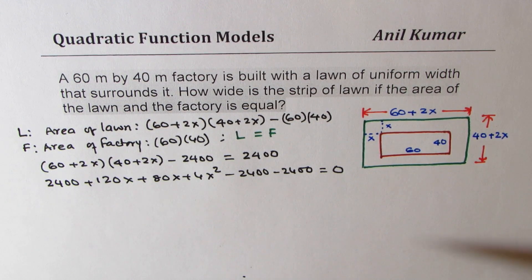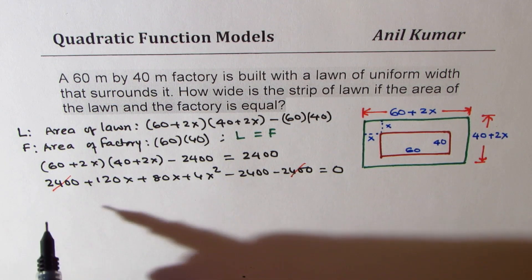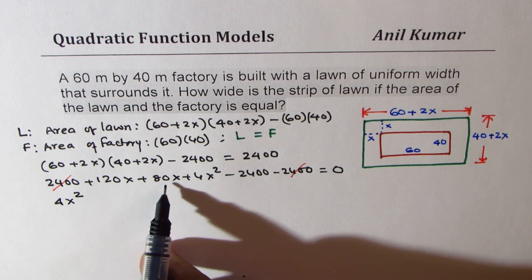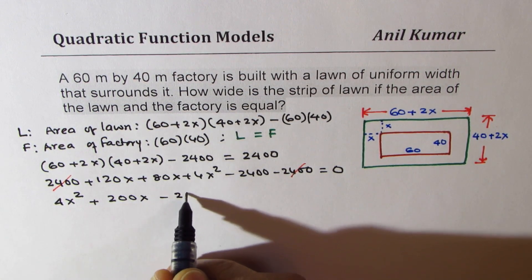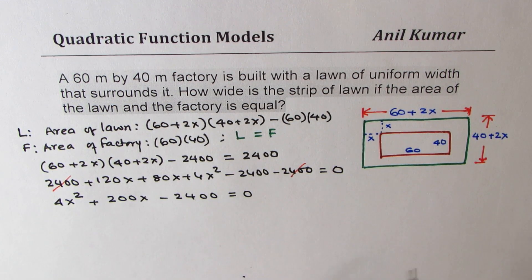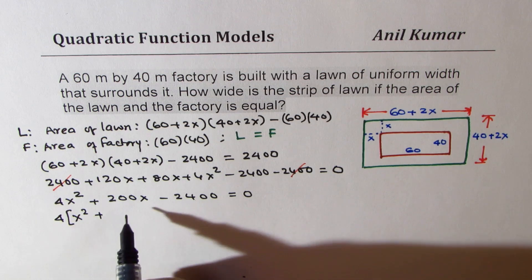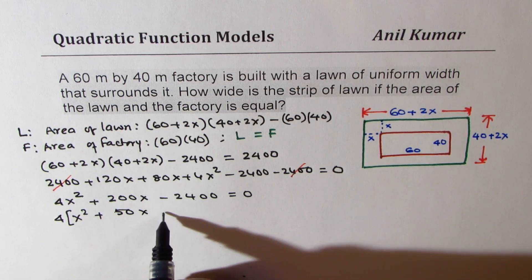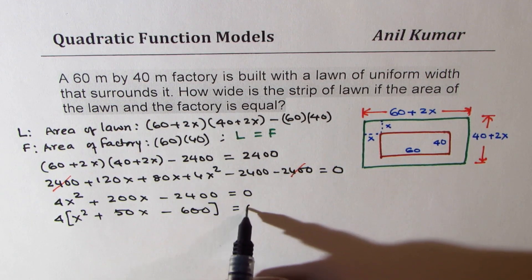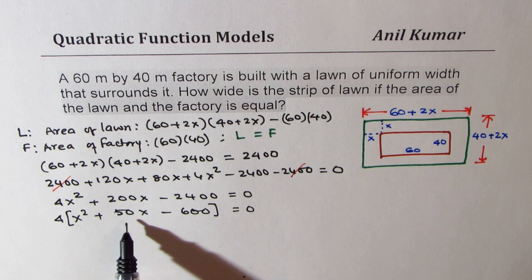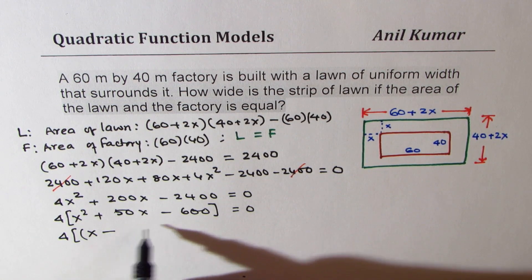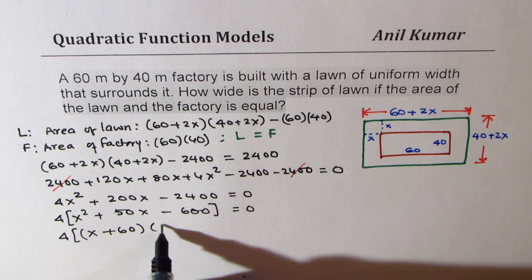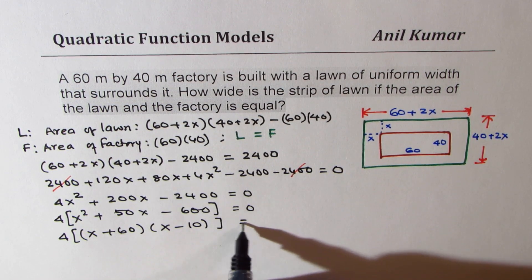Now we can simplify: the 2400s cancel. Writing 4x squared first, then combining the x terms — 120 plus 80 is 200x — we get 4x squared plus 200x minus 2400 equals 0. We can factor this; we need factors 60 and 10. So we get (x + 60)(x minus 10) equals 0.